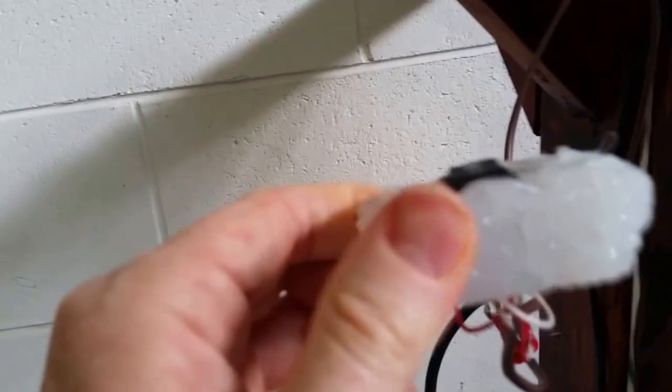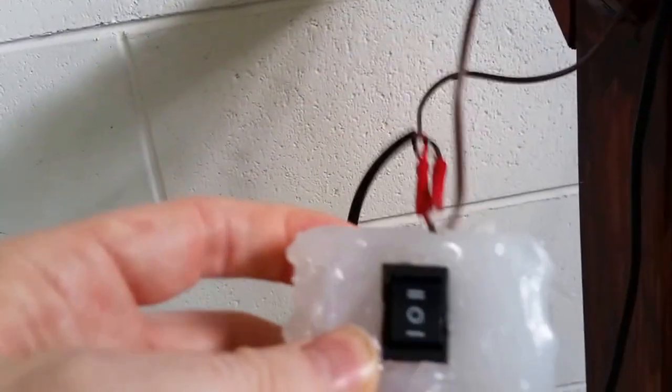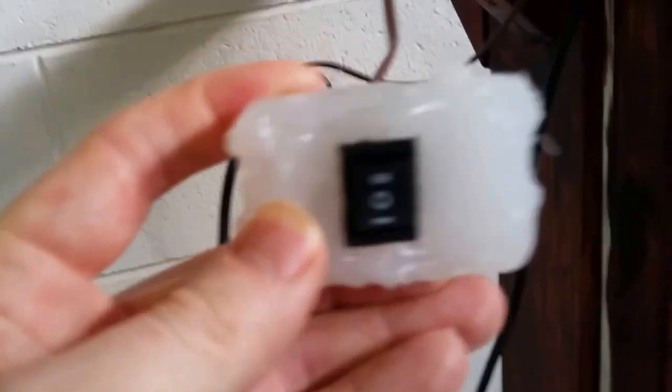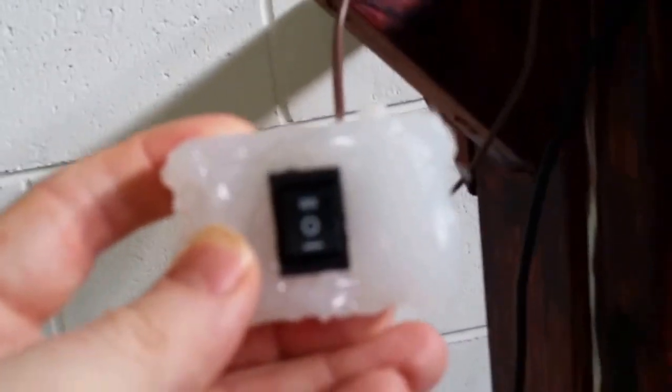I used a hot glue gun and I just poured it all over the place on the outside and it hardened. And I'm gonna screw this to the bottom of my desk. I know it doesn't look good but it's kind of a prototype till I find something else to use.